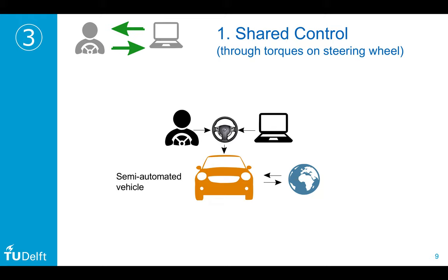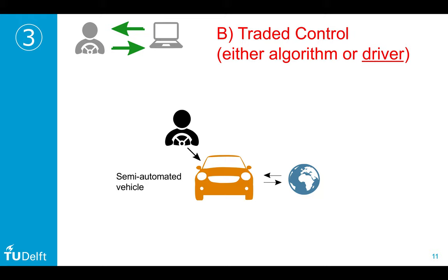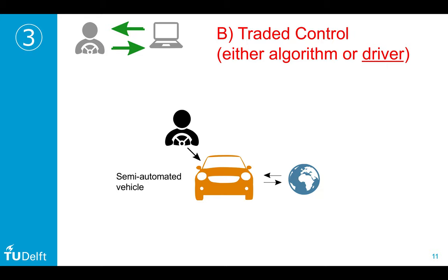One approach we also studied is shared control, where torques are present on the steering wheel so both driver and algorithm can exert forces and feel each other, adapting if designed for it. An alternative on the market is traded control, where it is either the algorithm or the driver in control — computationally simpler, since you don't have to model the interaction. But it doesn't allow you to understand the interaction behavior.